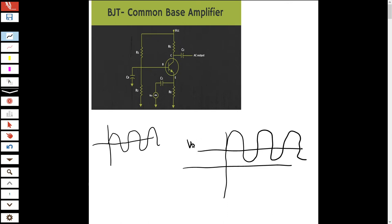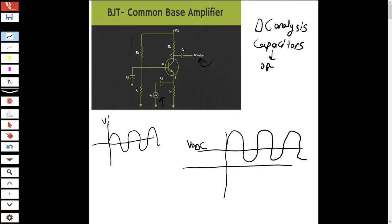This value is V_output DC and this is V_input. We call it common base because we apply input at the emitter side and take the output at the collector side, so the base is common. For DC analysis, remember that capacitors are open-circuited, meaning there will be no current passing through those branches.